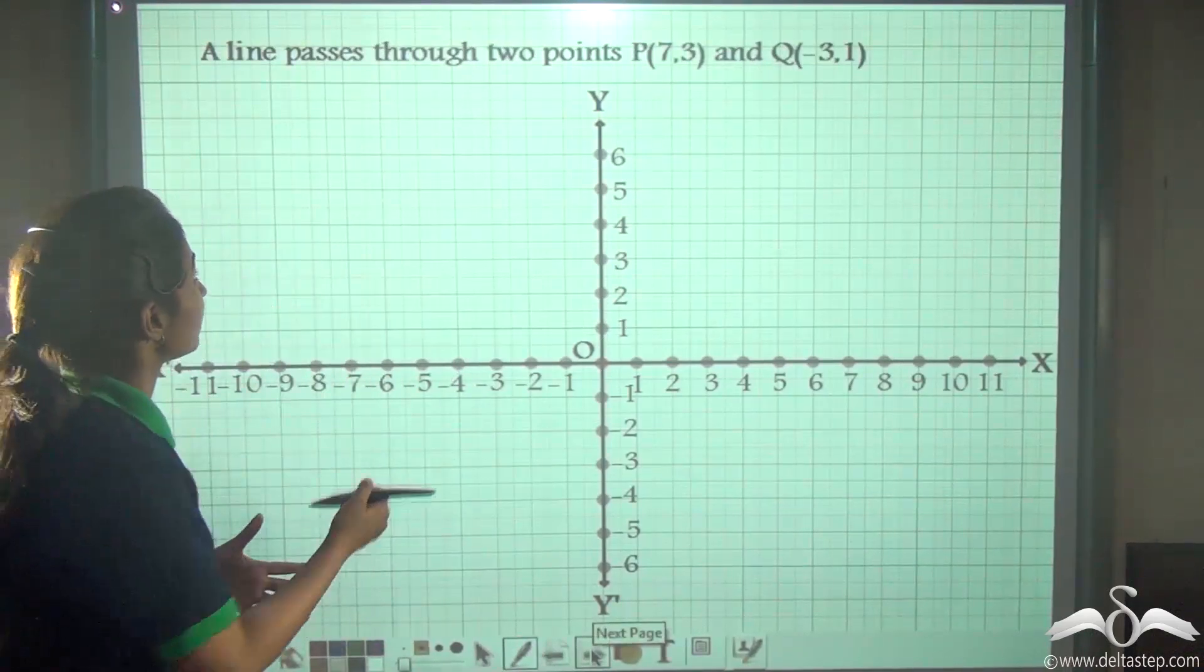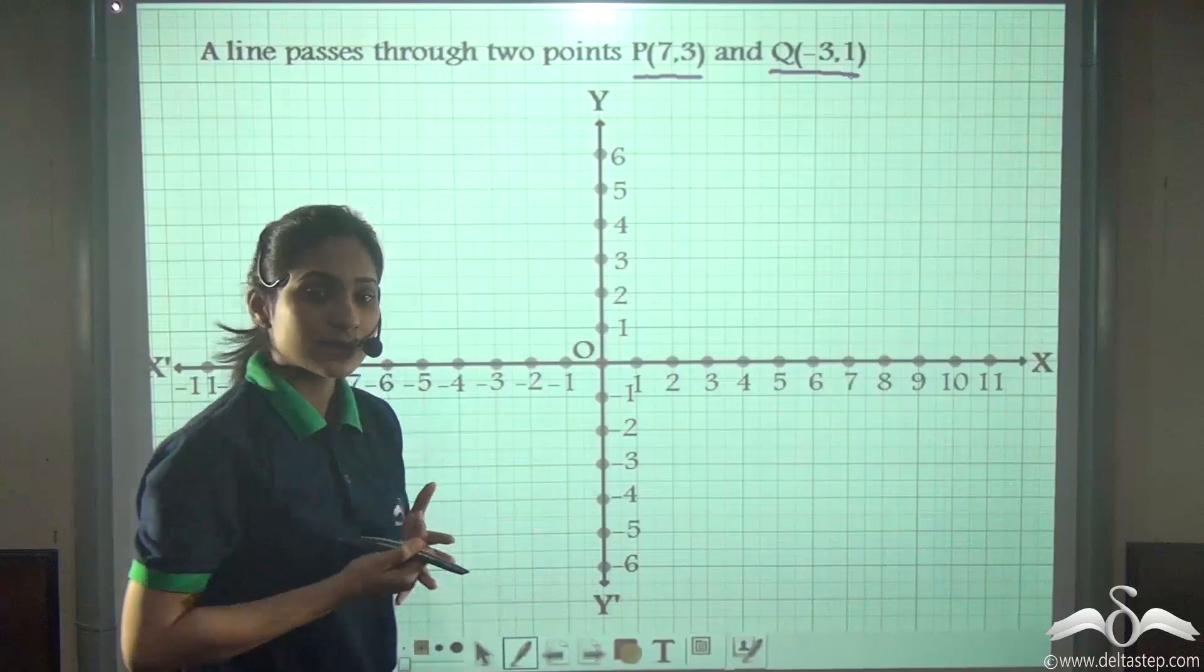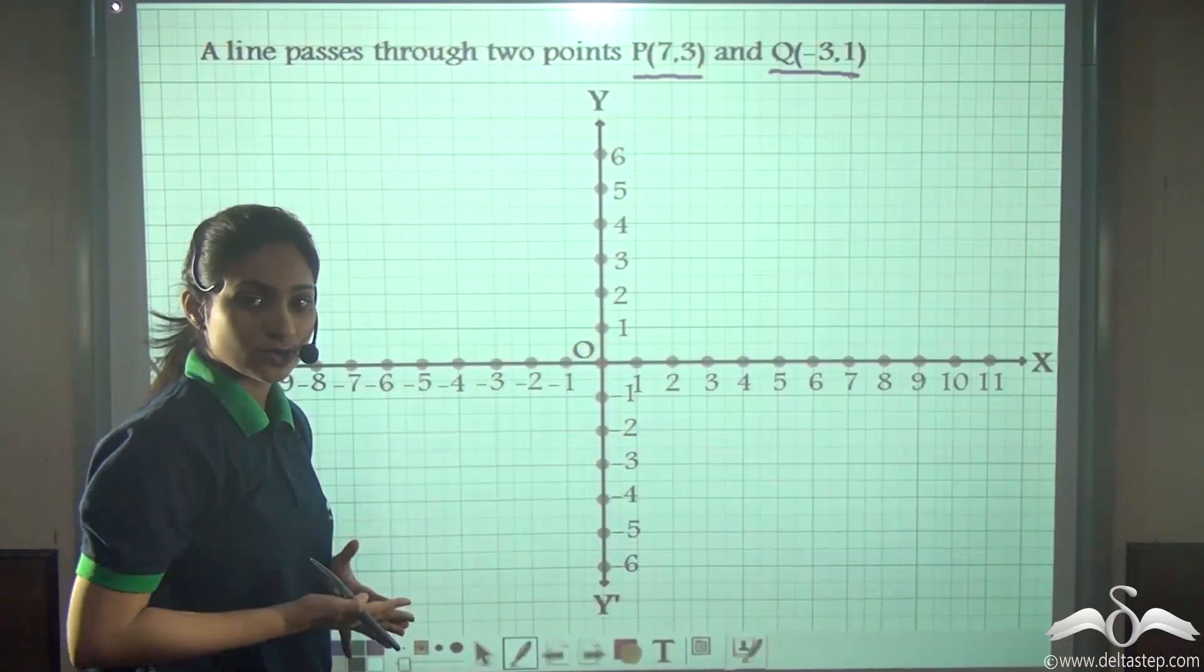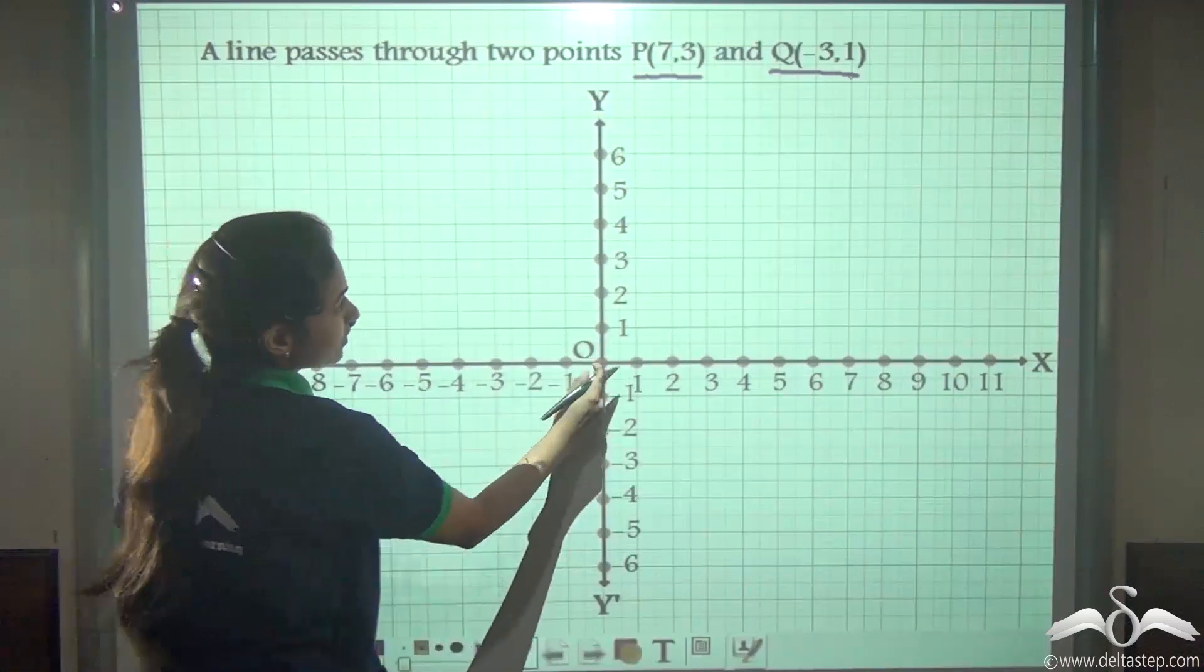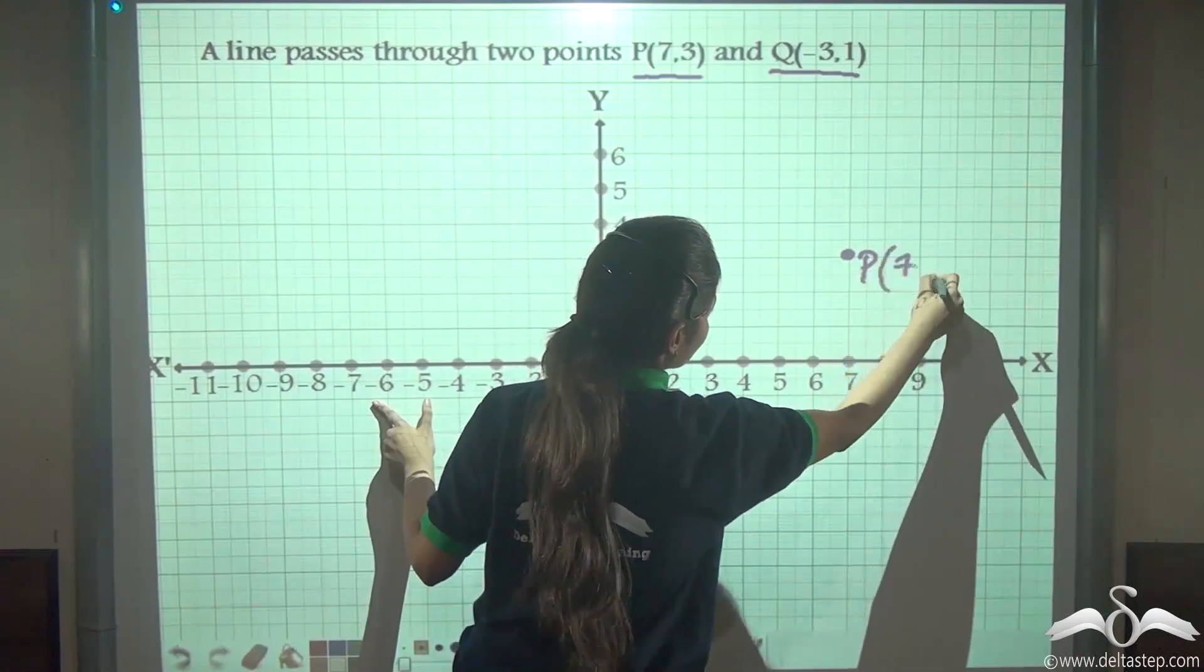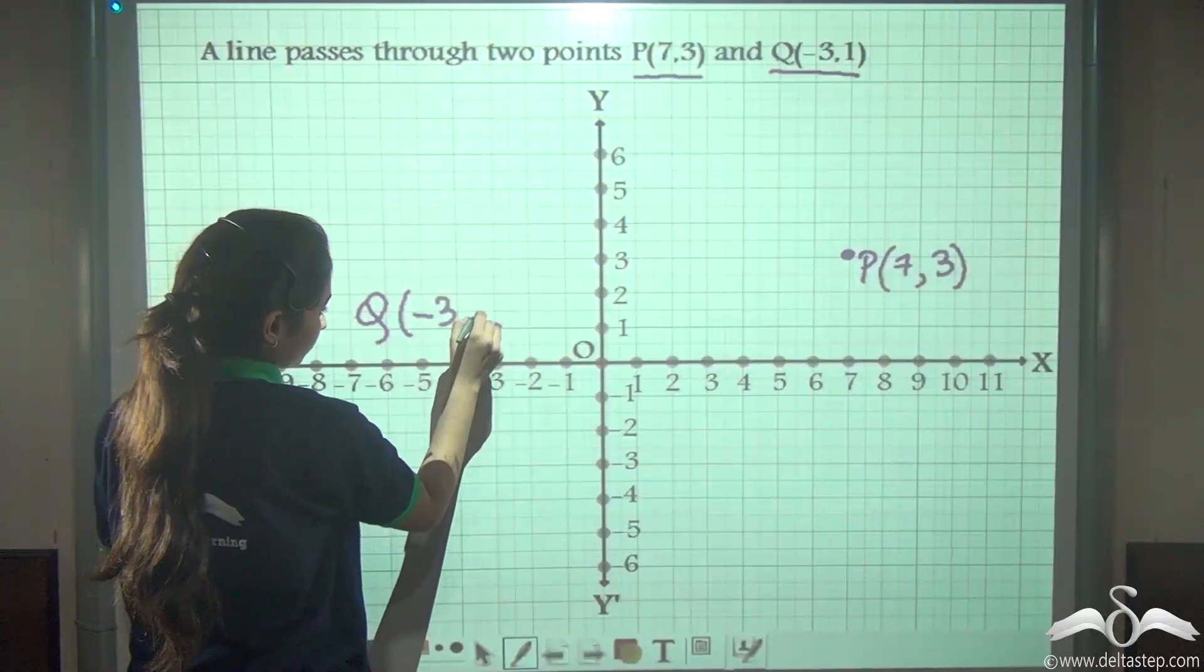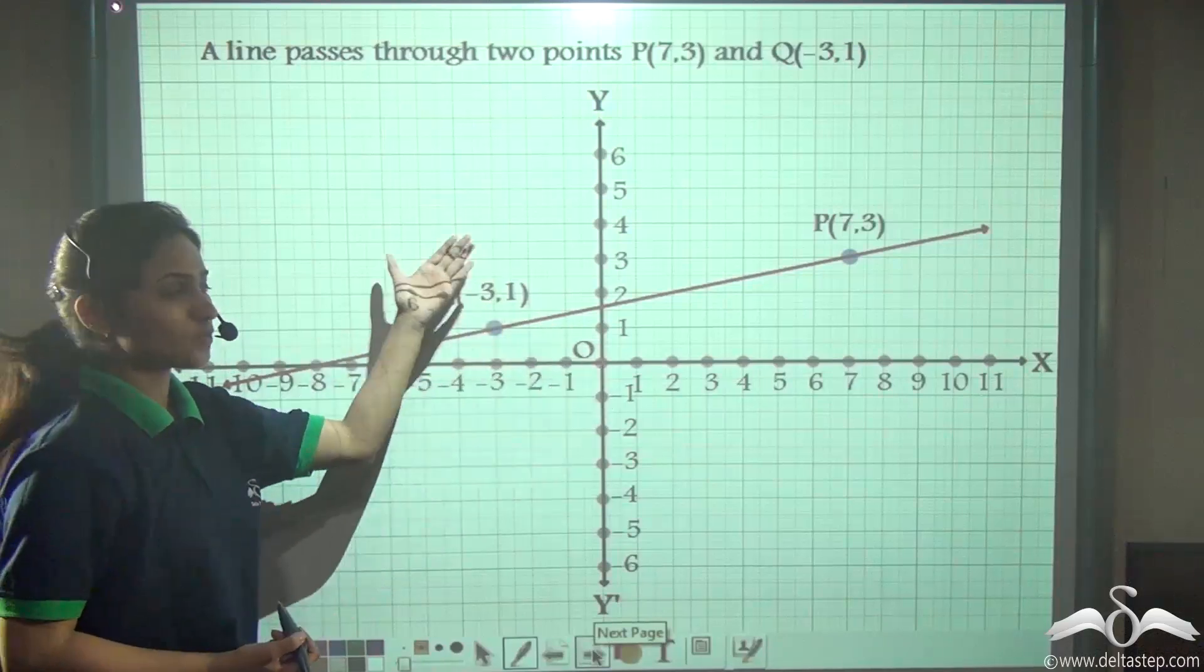Now there's another example. A line passes through two points P and Q. Well, this is very easy. If I give you any two points, you can draw a line by joining those two points. Similarly, you just have to plot these two points and join them to form a straight line. So we have to plot this line with P and Q. Join these two points. See, you get a straight line. So this was very easy.